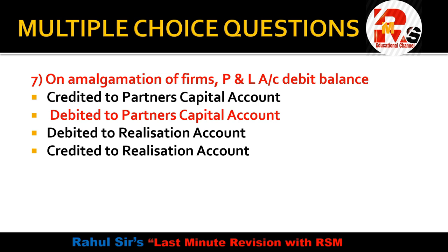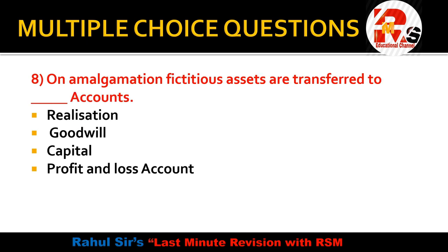Question 8: On amalgamation, fictitious assets are transferred to — realization account, goodwill, capital account, or profit and loss account? Fictitious assets are transferred to the debit side of the capital account. If profit and loss has a credit balance, meaning there are reserves, those reserves are transferred to the credit side of the partners' capital account.